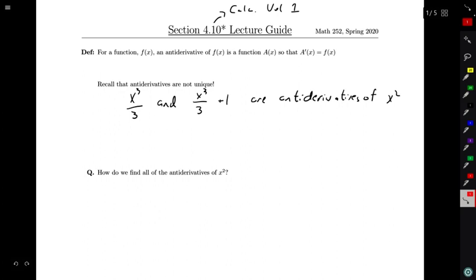If you take the derivative of x³/3, your power rule says bring down the 3 and reduce the exponent by 1. So you do that and the 3 cancels and you're left with x². If you take the derivative of x³/3 + 1, you get the exact same thing in this term. You get that x² out and the derivative of an added constant is 0. So this plus 1 goes away and you're also left with x² in the end.